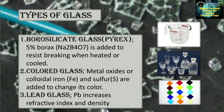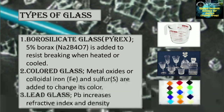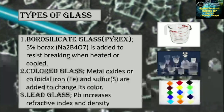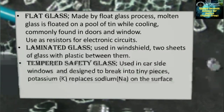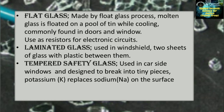Next are the types of glass. First is borosilicate glass, also known as Pyrex, which is made up of 5% borax (Na2B4O7) added to resist breaking when heated or cooled. Second is colored glass, where metal oxides or colloidal iron or sulfur are added to change its color. Third is lead glass — lead increases the refractive index and density. Next is flat glass, made by the float glass process where molten glass is floated